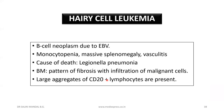Hairy cell leukemia is a B-cell neoplasm due to Epstein-Barr virus. Features include monocytopenia, massive splenomegaly, and vasculitis. The cause of death in hairy cell leukemia is usually Legionella pneumonia. In bone marrow, there is a pattern of fibrosis with infiltration of malignant cells and large aggregates of CD20-positive lymphocytes.